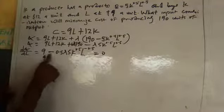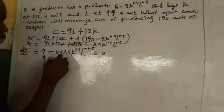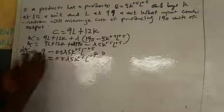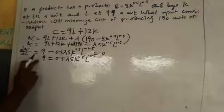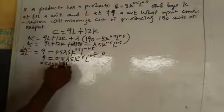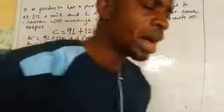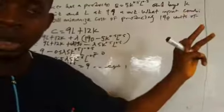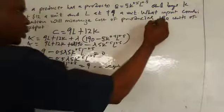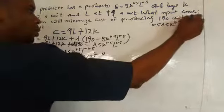Simplifying the first-order condition, transfer the derivative term to the other side. The sign does not change when rearranging; we get: 0.5λ5K^0.5 L^(−0.5) = 9. This is our first equation. So equation 1 is: 0.5λ5K^0.5 L^(−0.5) = 9.